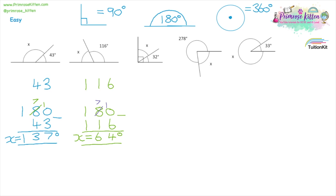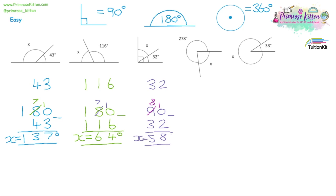Check your answer: 64 plus 116 should give you 180. Question three — identify the angle you've been given: 32. Now that looks like a right angle; we've got the square shape. So we're taking our angle away from 90 this time. We have to borrow, so 10 take away 2 and 8 take away 3. Our missing angle is 58 degrees.